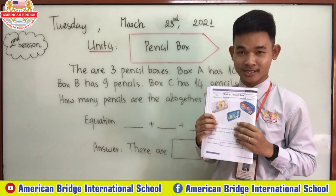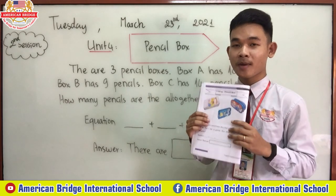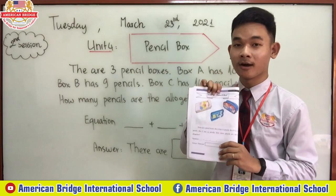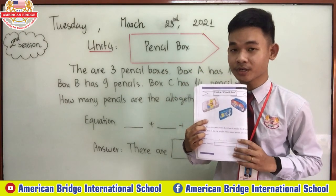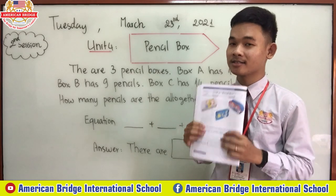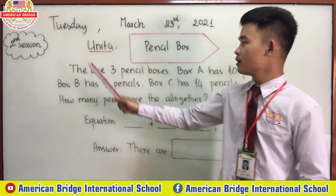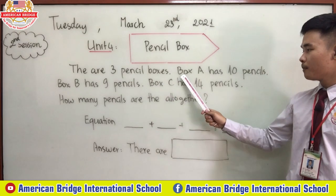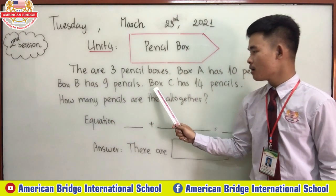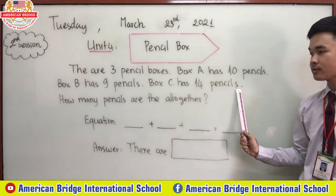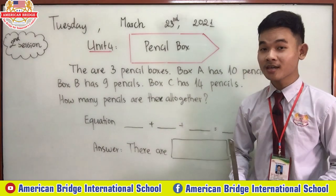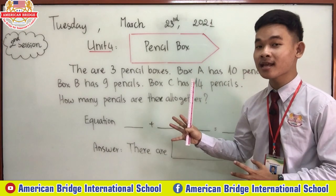On page 4 you can see unit 4: pencil box. How many pencil boxes can you see? Three pencil boxes. Today we're going to do the addition of three parts. I will read the problem for you first, then we'll try to understand it, and after that we'll solve the problem all together.